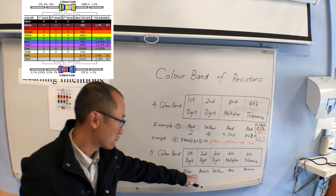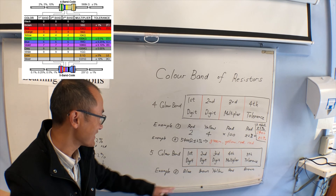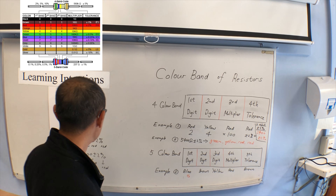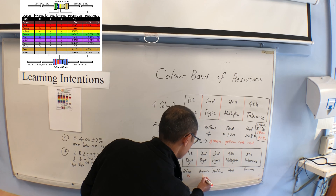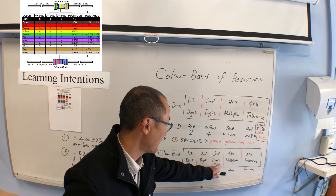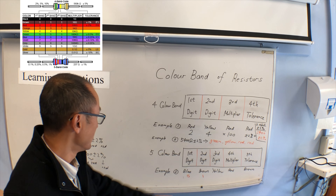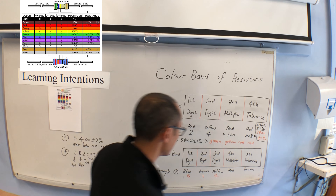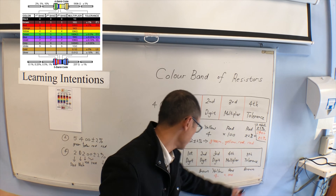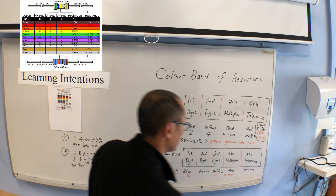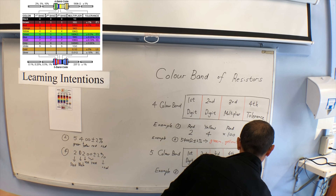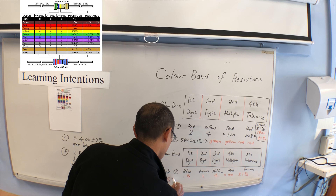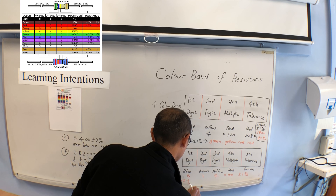Let's say the five bands are blue, brown, yellow, red, and brown. Blue is number six, brown is one, and — remember, for five color bands the third band is still a digit — yellow is four. Red is the multiplier: times one hundred. When you put them together, it becomes sixty-one thousand four hundred plus one percent.